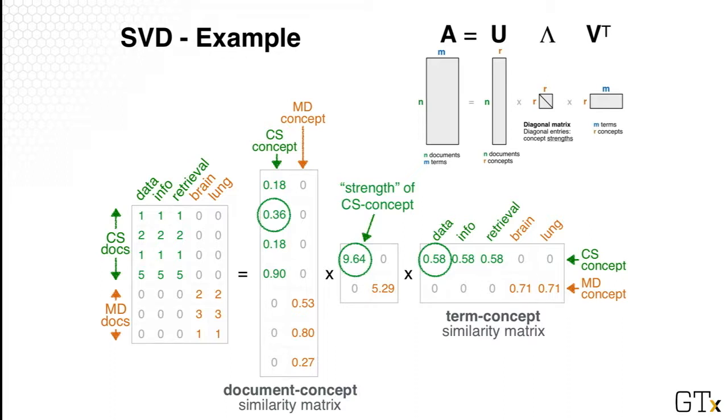And in our U matrix, you will see that we have a 0.9 value, which is the biggest value in that column. And that makes sense. It correlates with the word count in the original data matrix. So that's a very plausible thing that we observe, meaning that particular document, document number four, is strongly associated with the CS concept.